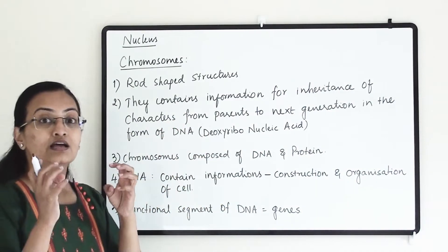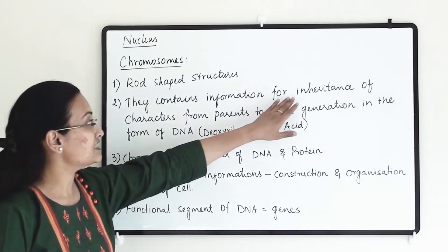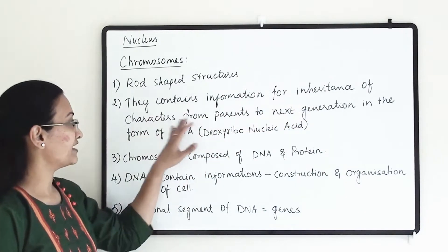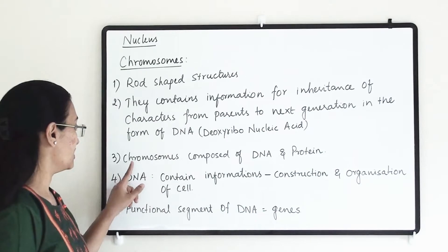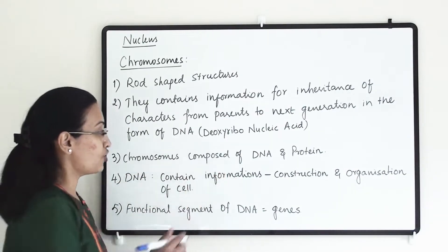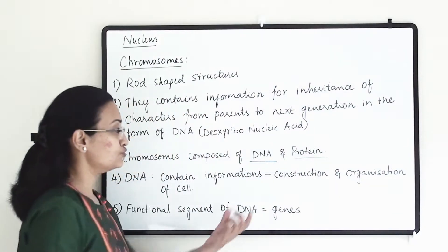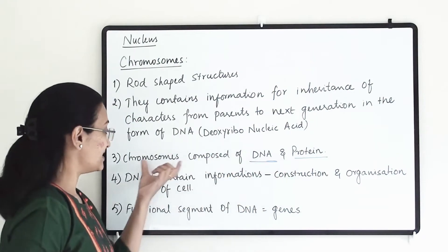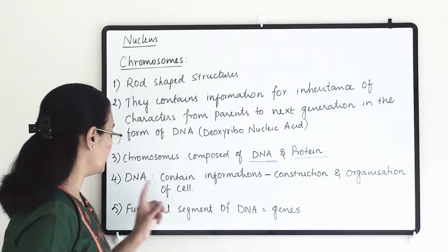Chromosomes store the information about inheritance of characters from parents to the next generation. Chromosomes are composed of DNA and protein. So these two things — DNA and protein — are present inside the chromosomes.